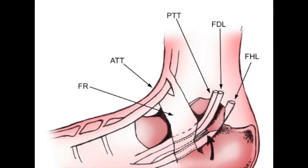A quick anatomical review — we've got four main structures for this injection that we're going to visualize under ultrasound. The posterior tibial tendon, which is PTT, the FDL, or flexor digitorum longus.